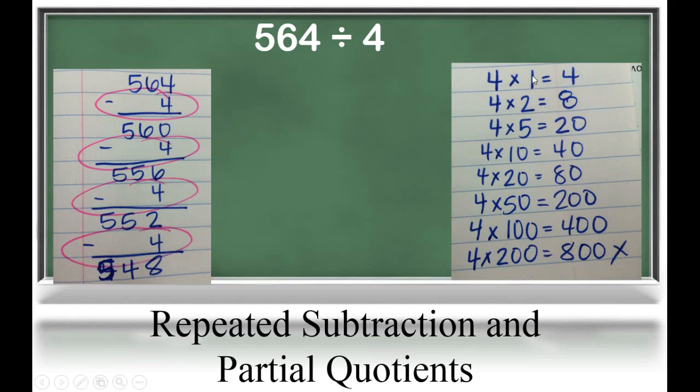They can start with 4 times 1, 4 times 2, and 4 times 5 because those are fast facts that most students know by memory. Then, they can use their patterns of multiplication to extend it until they get to a multiple that is close to 564. In this case, our largest multiple is 400.